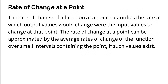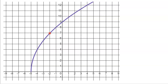Now, read that three times fast — it sounds like a Dr. Seuss riddle. So let's do our best to make that as simple as possible. Here we have a function — a beautiful purple function — and we're analyzing one specific point. That specific point is negative two comma seven: input negative two, output seven.